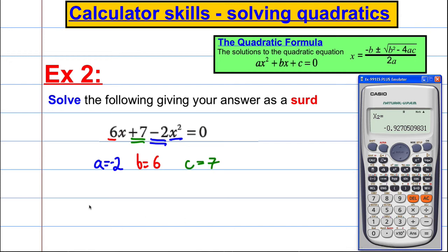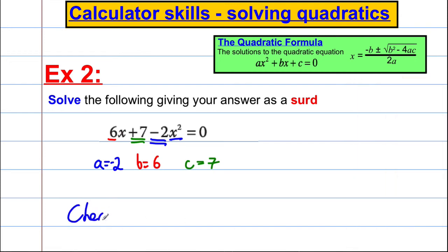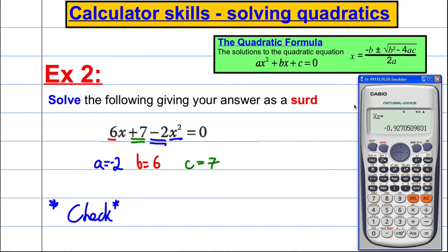And then we check at the end. So this is our check. Be careful, it's not the way you do it. It's your check method. So your check method here, you would go mode, equation, quadratic. And your A is negative 2. Your B is 6. And your C is 7. Press equals. And there's one of your answers.